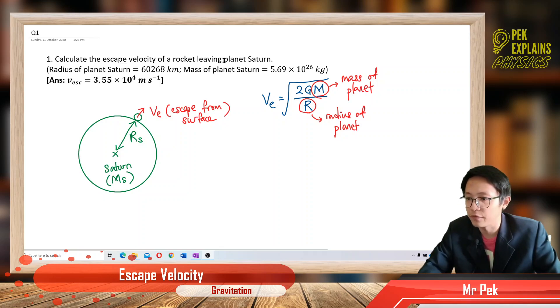Now you want to leave planet Saturn. So this is the mass of planet Saturn and this is the radius of planet Saturn. The bigger the mass, the higher escape velocity is needed. Because the higher the mass of planet, the harder to leave the planet.